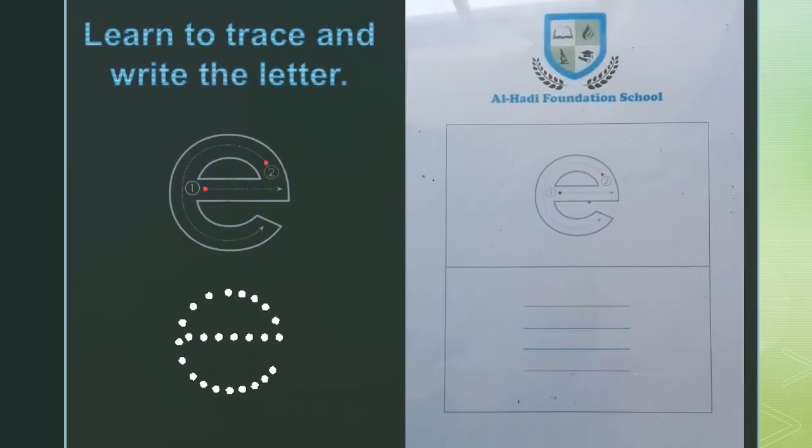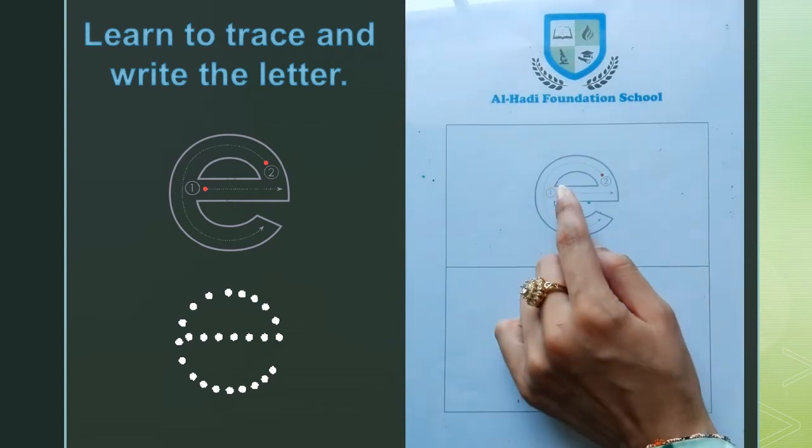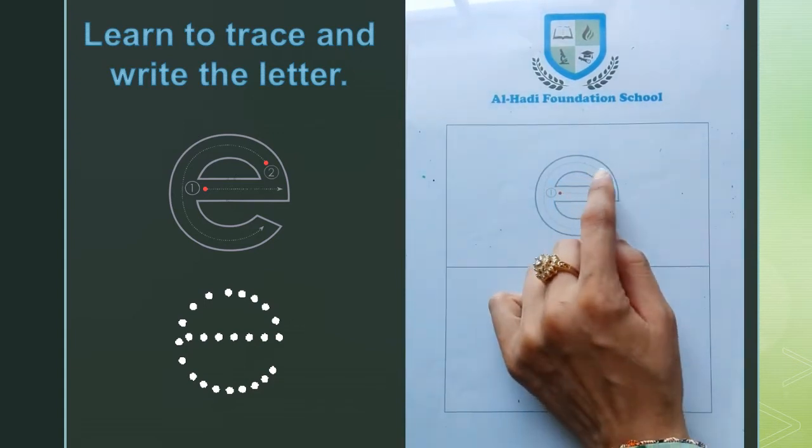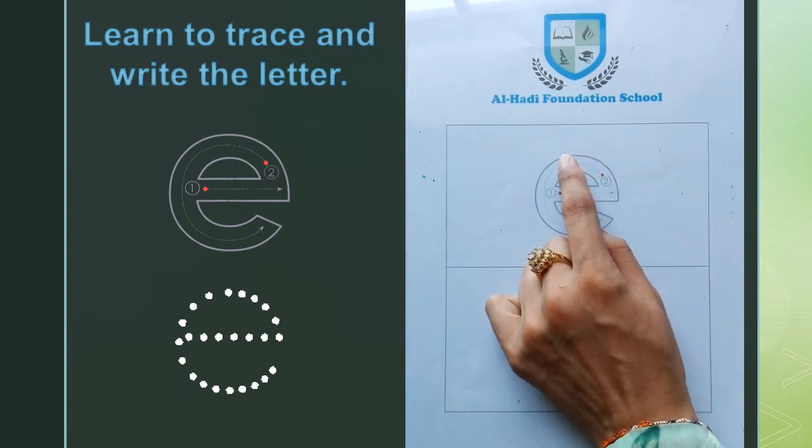हम letter E को trace and write करना सिखेंगे. Letter E को trace and write करते हुए two steps को follow करना है. और दोनों steps तस्वीर पर वाजिया हैं. पहले अपनी finger की मदद से letter E को trace करें. पहले red dot पे अपनी finger रखें. Left to right straight line बनाएं. दूसरे red dot पे finger रखें और left curve बनाएं.